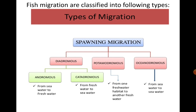Diadromous migration includes anadromous and catadromous. Note there is a typographical error — it should be spelled A-N-A, anadromous. Anadromous migration is from sea water to fresh water — when fishes move from ocean to fresh water. Catadromous is the reverse, from fresh water to sea water.